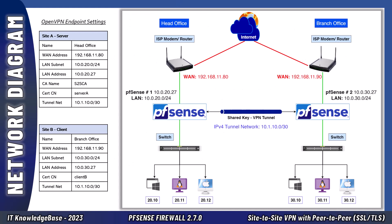Let's discuss our existing network scenario first. We have identically installed and run PFSense Firewall 2.7.0 Community Edition — the latest version — at all of our branches. We also have two sites: head office and branch office, or could have more sites if required.